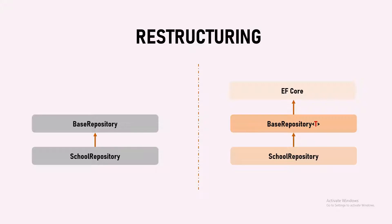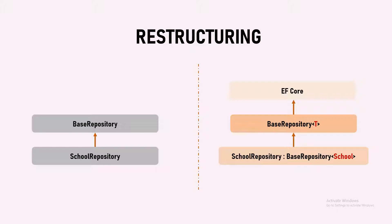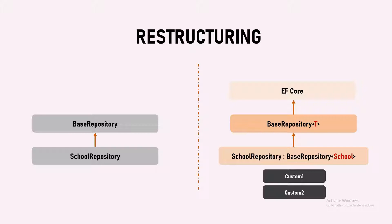Coming to the school repository — it is specific to the school, meaning it can only handle items related to the school. The school repository needs everything from the base repository, so it inherits from the base repository. When it inherits, it can pass the class it demands. School repository handles only items specific to school, so it passes school to the base repository. The base repository is generic, so it can accept school and do the operations. If we have anything specific to the school repository, we can always put it inside the school repository. All the basic CRUD operations will be inherited from the base repository. For any complicated or specific implementation, we put it inside that specific repository.